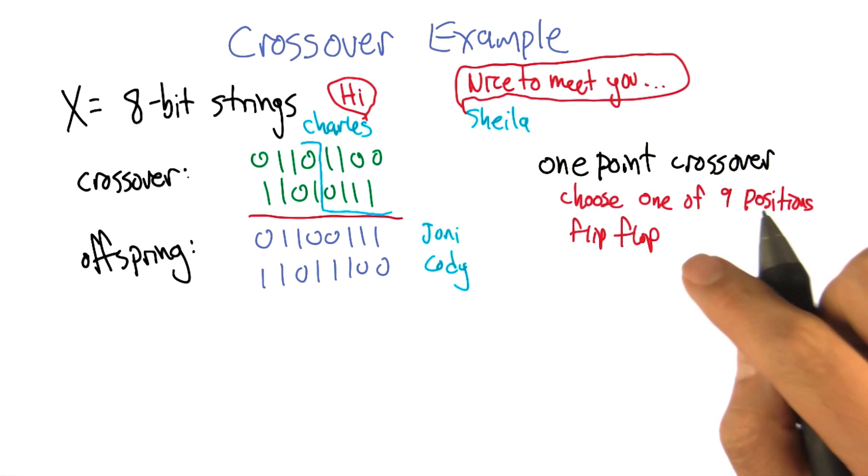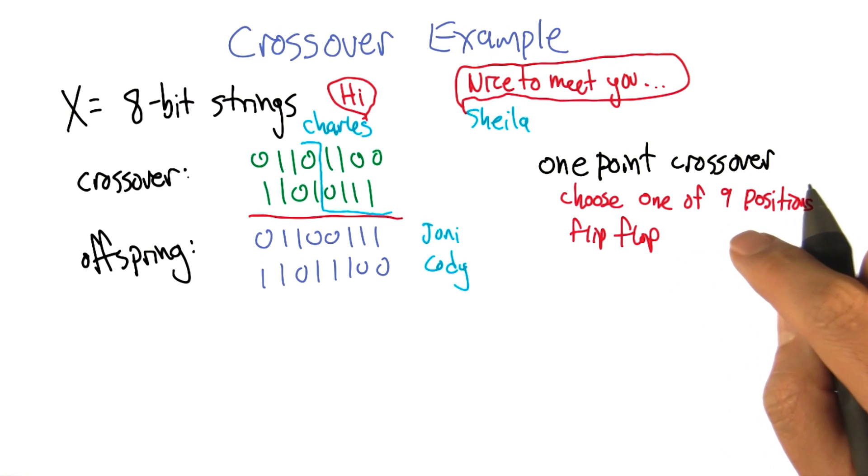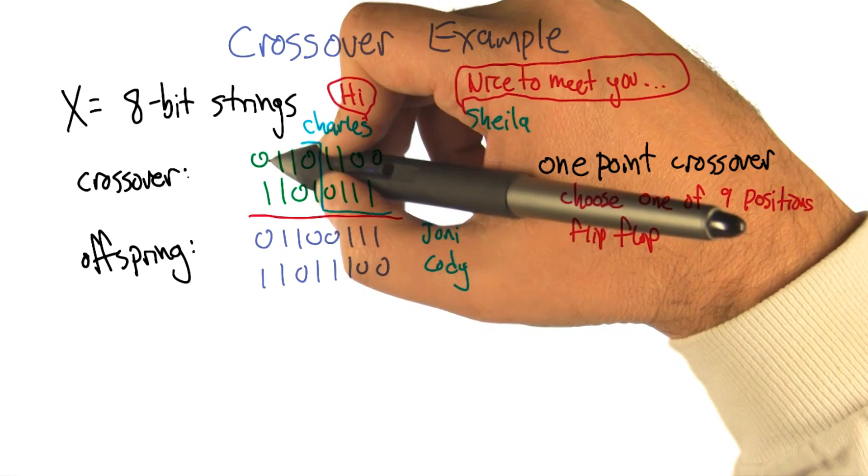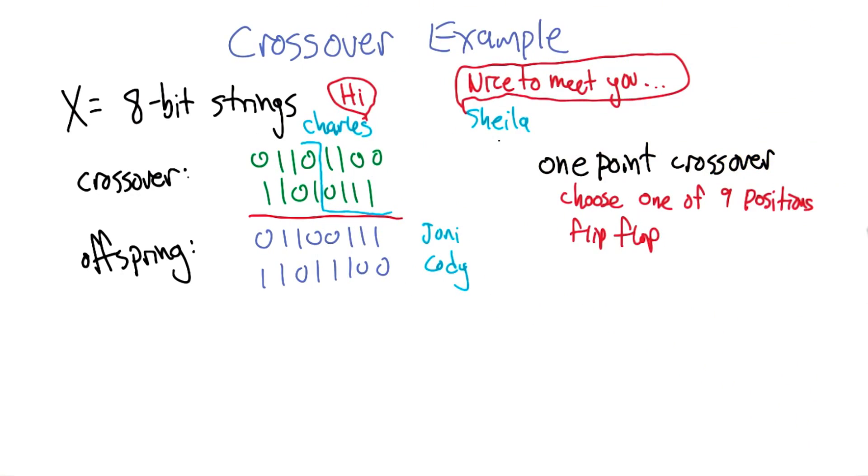All right. So now, I want you to think about this for a second, Charles. So, I don't know if it's an inductive bias, but what kind of bias do we put in when we say we're going to choose one of these points, and we're going to flip flop based on where that point is chosen? What kind of offspring is that going to generate?